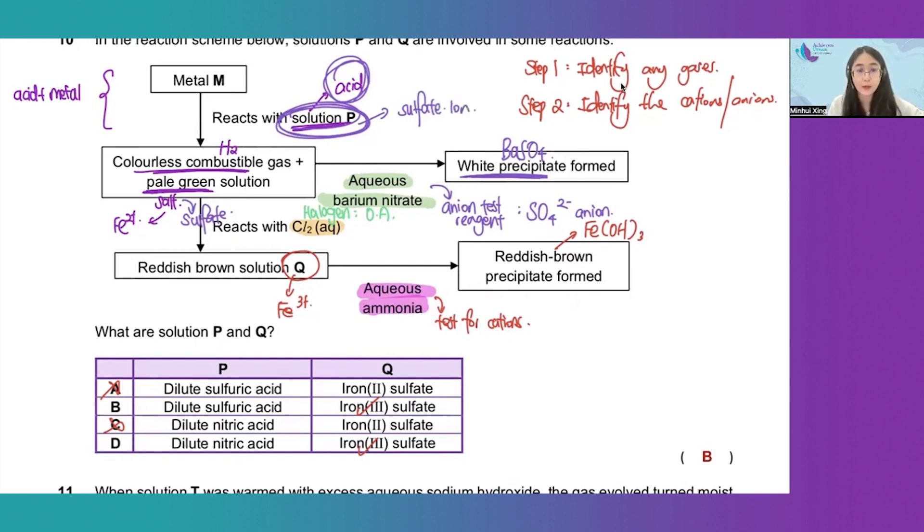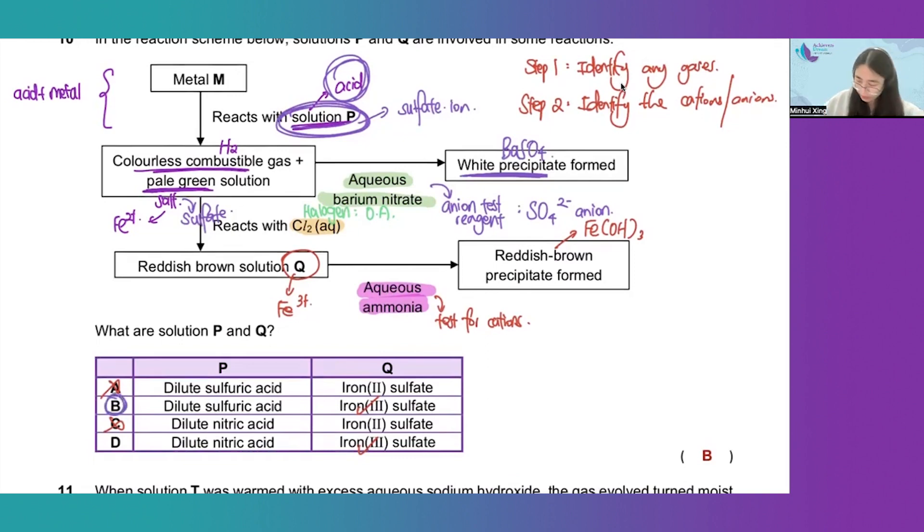Which acid contains sulfate ion? The answer must be option B, which is sulfuric acid.